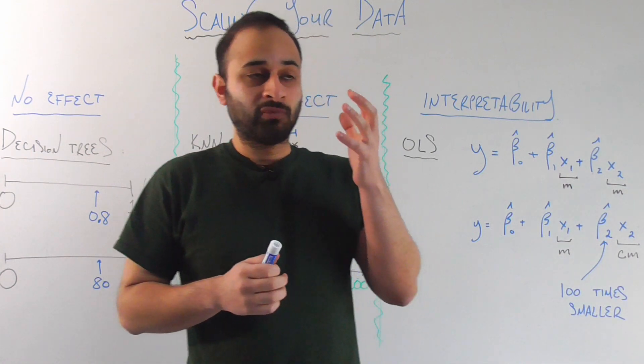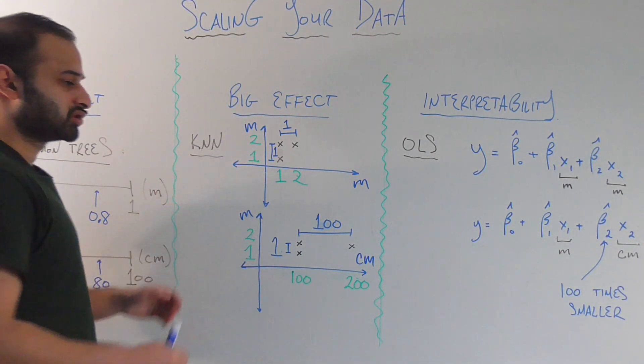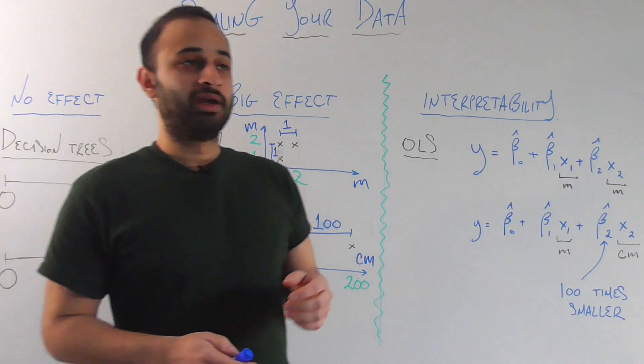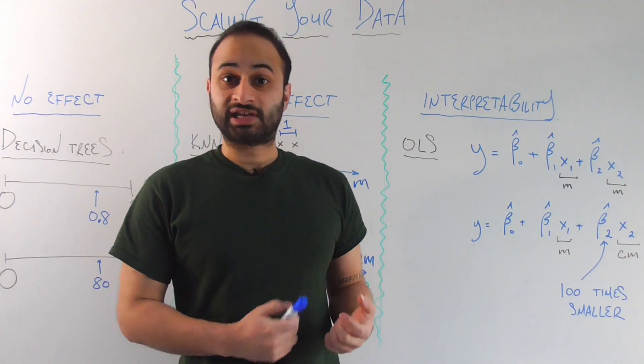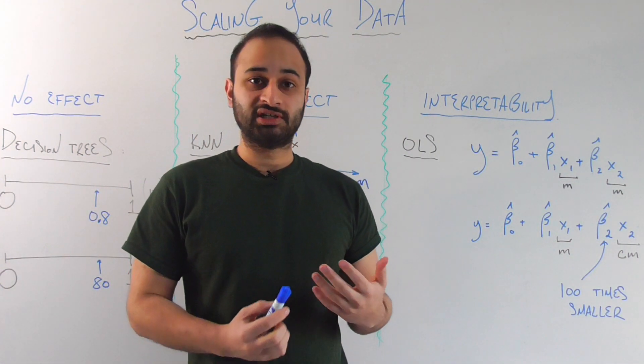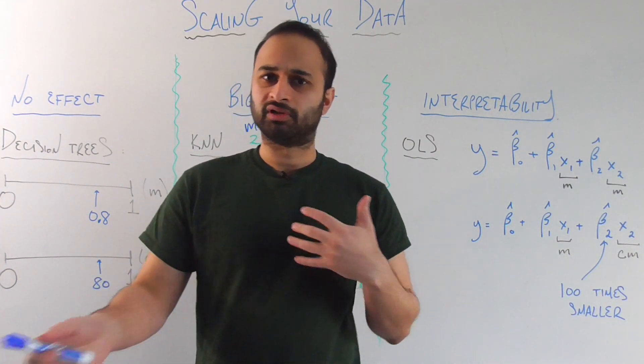And if I had to put kind of a unifying bow tie or a theme on this video, I would say that if your machine learning method involves distances, for example, k-nearest neighbors or support vector machines or k-means or anything that involves distances between things, then you should scale your data definitely because those distances are going to be skewed if all your variables are measured on some different unit.